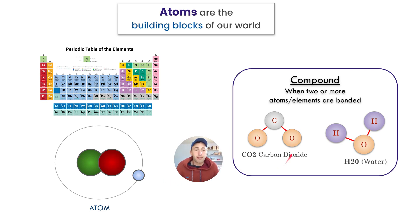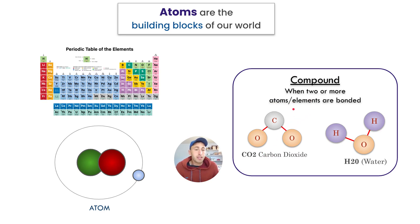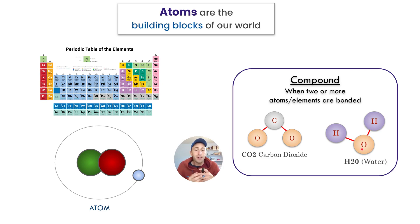These atoms come together to make up different compounds. One carbon and two oxygen atoms make up a CO2 compound, which will be discussed a lot in this course. That is when two or more atoms, also referred to as elements, are bonded together. Two hydrogen atoms and one oxygen atom combine to make H2O, which is water. The physical world is made up of these atoms, which come together to make up different types of compounds.